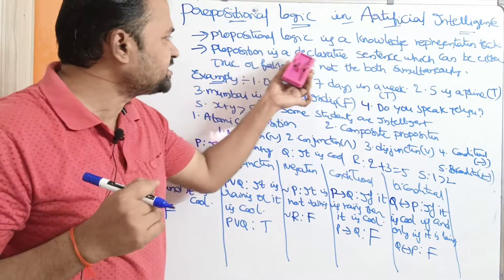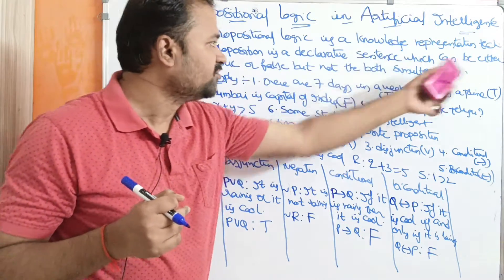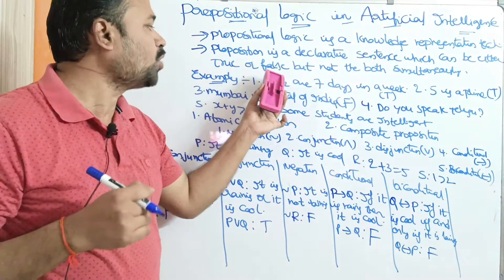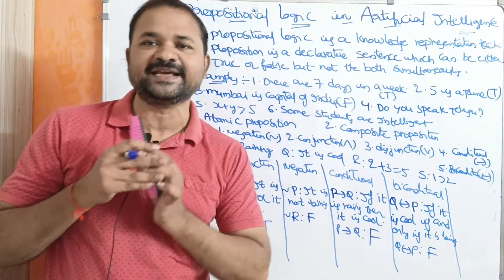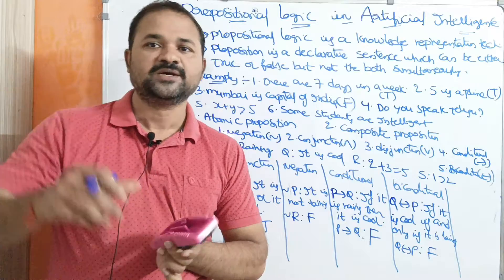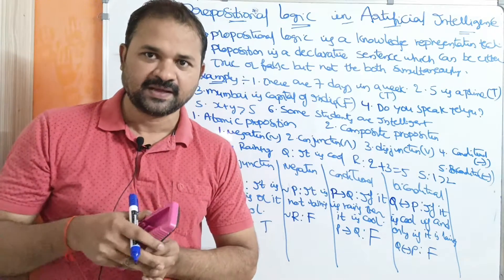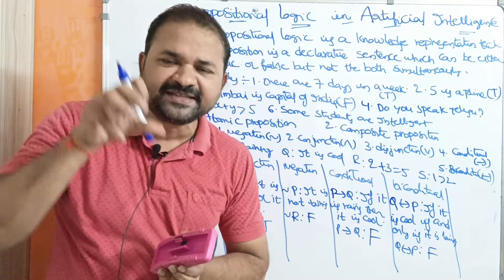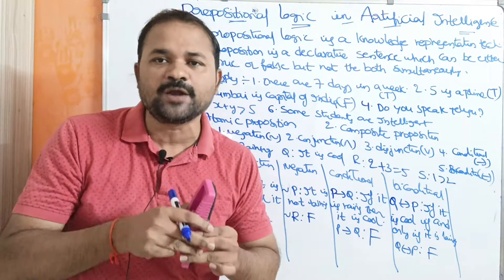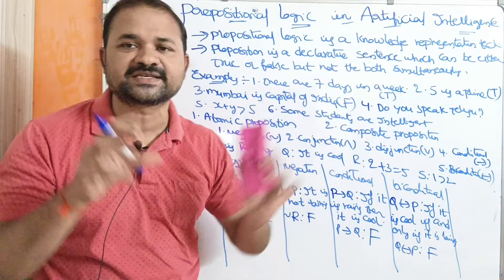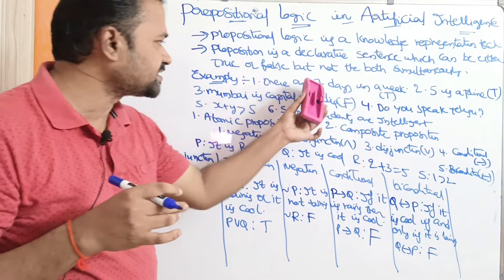A proposition is a declarative sentence which can be either true or false, but not both simultaneously. So the truth value of a proposition may be either true or false, but it can't be true and false at the same time. Let us see some examples.